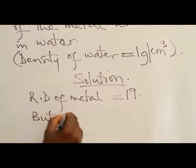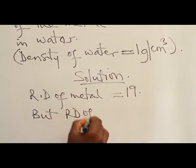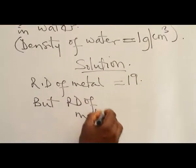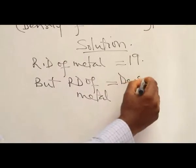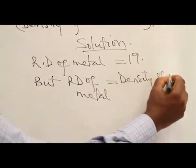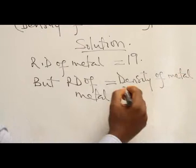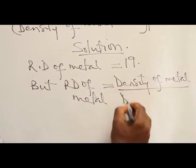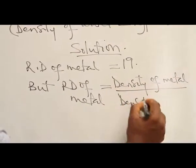Relative density of the metal is equal to the density of the metal divided by density of water.